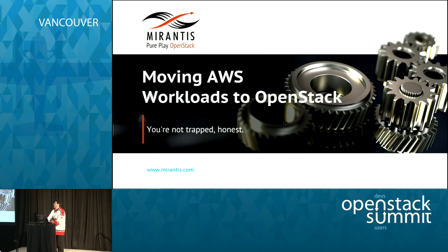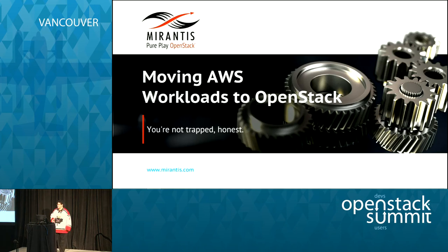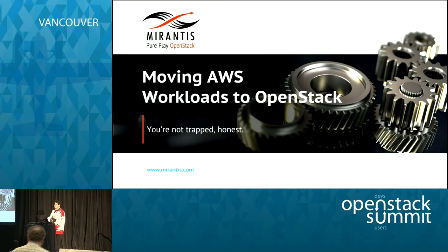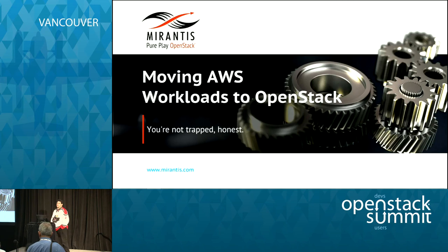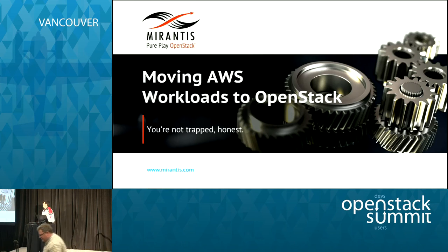Good afternoon, everybody. Welcome to the session on moving AWS workloads to OpenStack. This is a topic that comes up a lot because in a lot of ways, OpenStack feels very much like a free alternative to Amazon — the same way it feels like a free alternative to VMware or anyone else charging you to host content in the public cloud. The problem is once you discover that your developers have half of your company's production out in these public clouds, you realize that maybe that's not such a great thing and you want to bring it back inside.